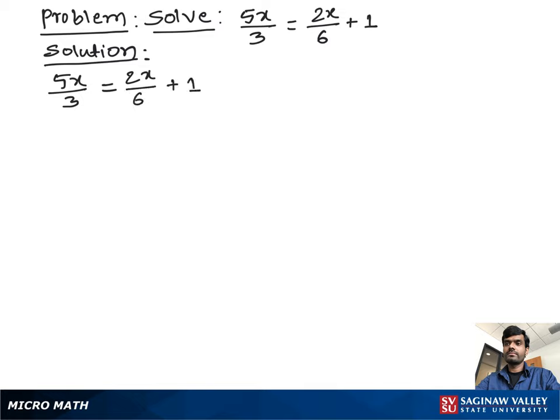Now to solve this problem, we multiply both sides by lowest common denominator LCD 6. So we multiply 6 times 5x over 3 equal to 6 times 2x over 6 plus 1.